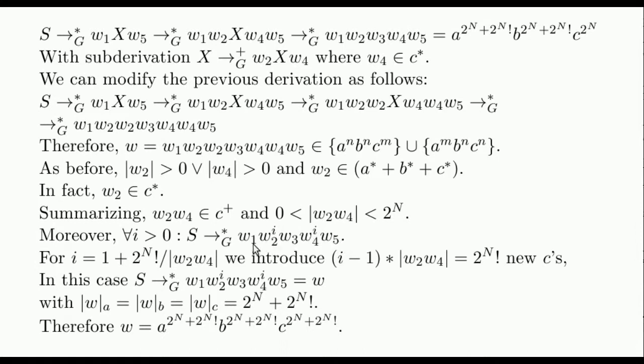We choose this specific i. Note that this i is properly defined as a natural because 2^N! is divisible by all numbers less than or equal to 2^N. And we have already seen that the size of w2w4 is between 1 and 2^N.